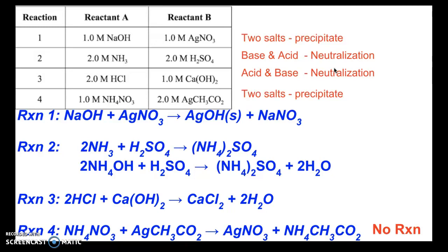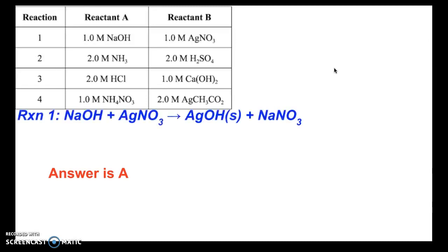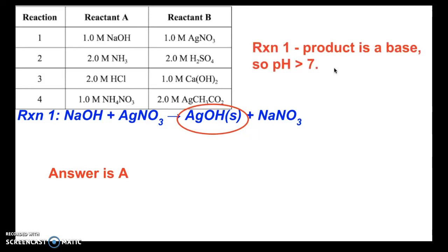All of that work was set up to figure out if we have an excess base or a base as a product. The answer to question 1 is reaction A, where the pH is greater than 7, meaning we have a base. The product silver hydroxide is a base — it's a metal hydroxide. Since reaction 1 produces a base as its product, the pH will be greater than 7. That's why the answer for question 1 is A.